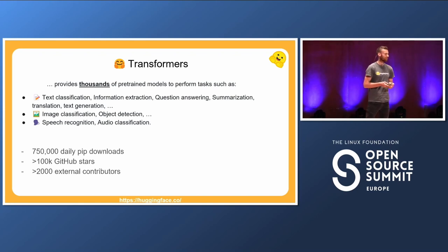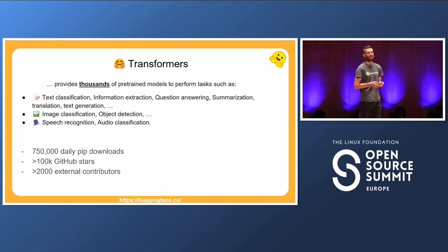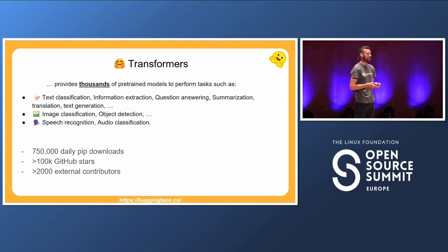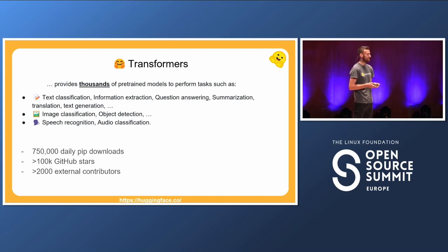Let's talk about Transformers real quick. Transformers is a machine learning library for machine learning architectures and models. It provides very easy access to thousands of pre-trained models, and I think by now it covers pretty much every task you can imagine in machine learning — going from NLP with things like text classification and text generation, over to image with image classification.